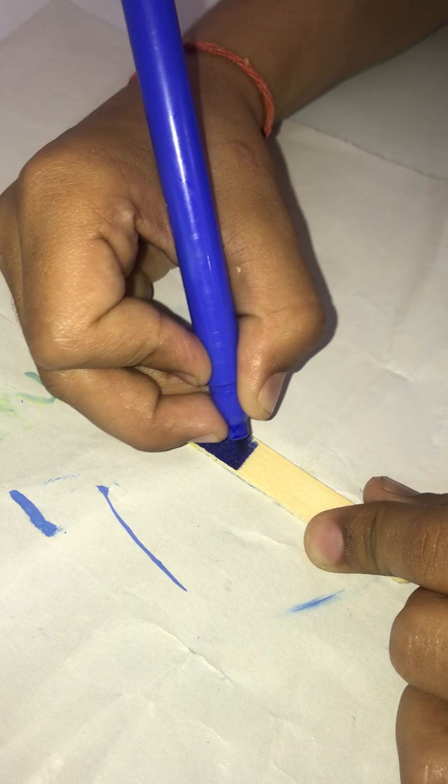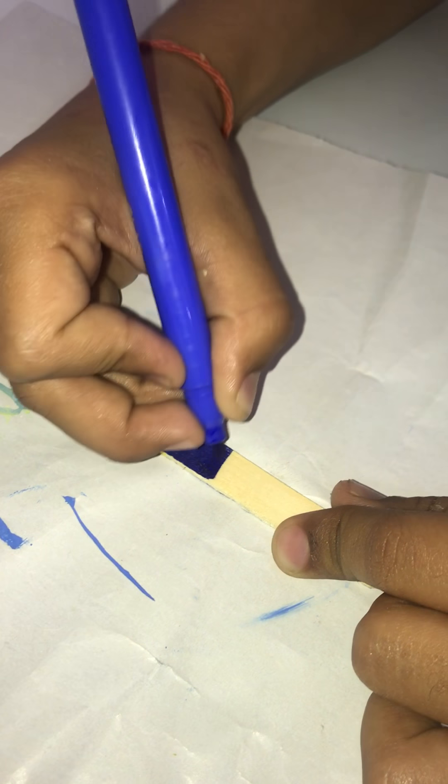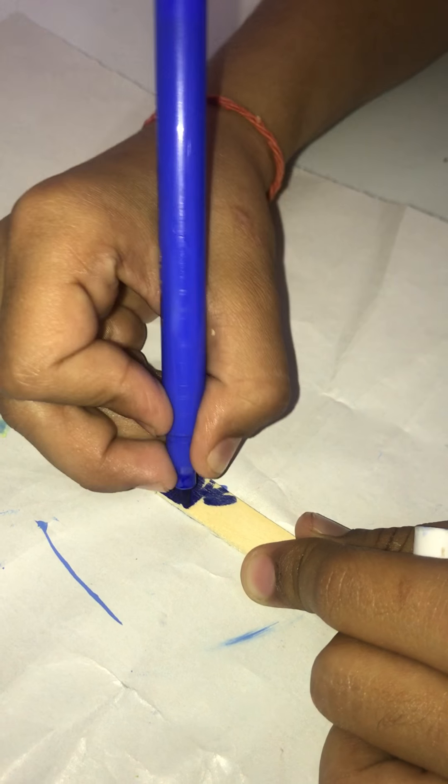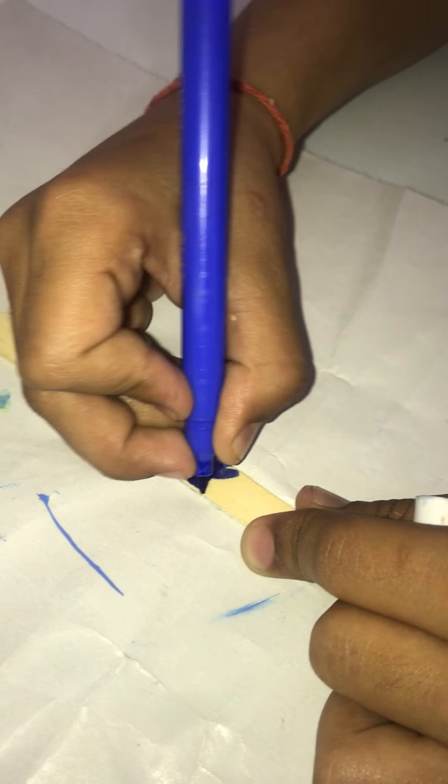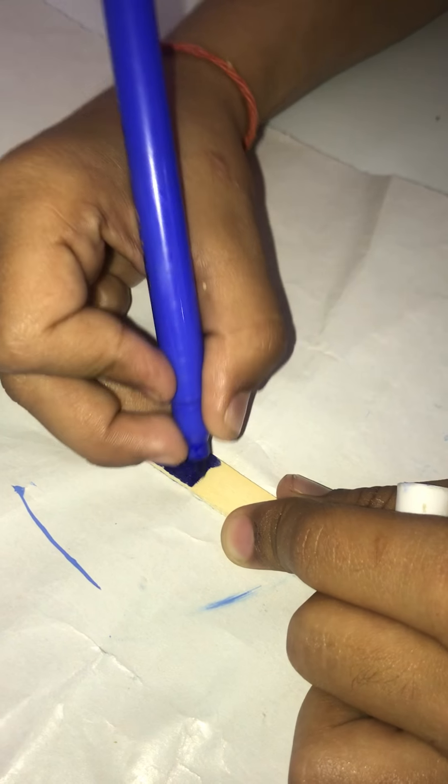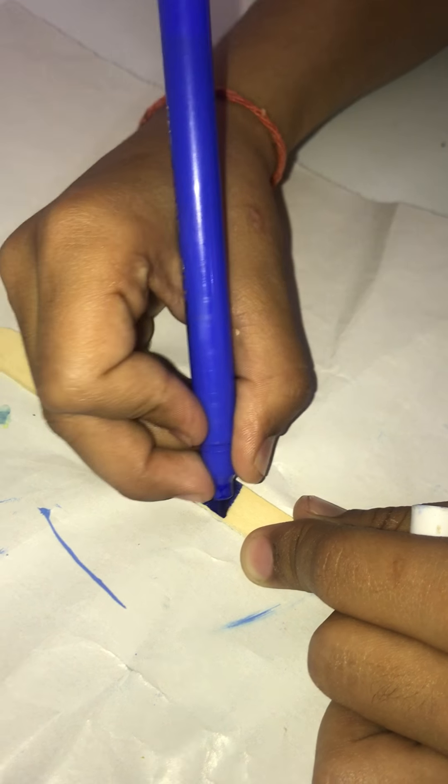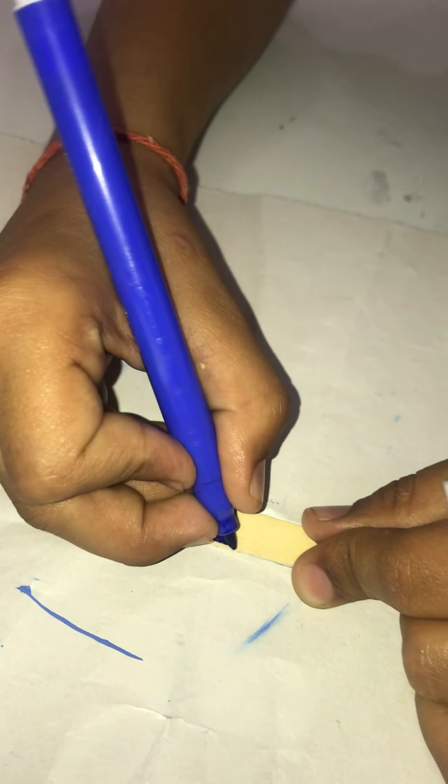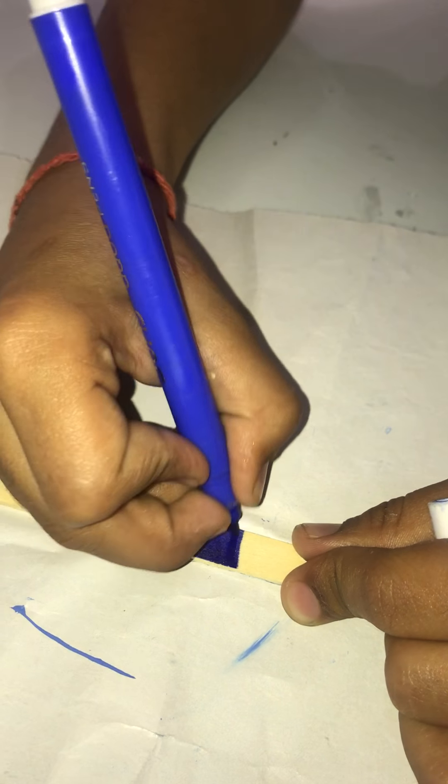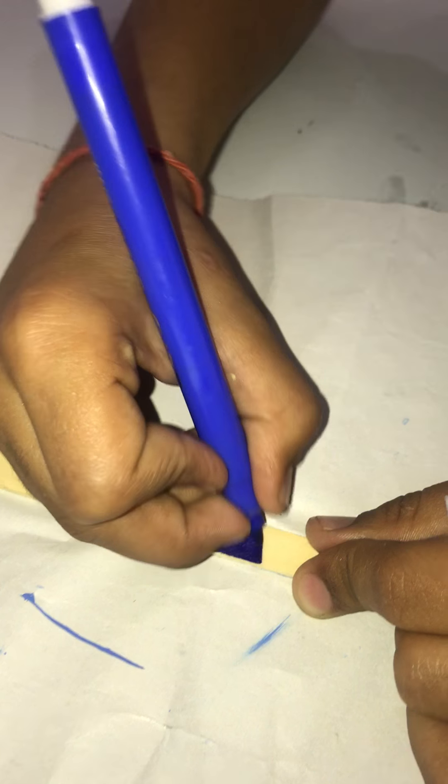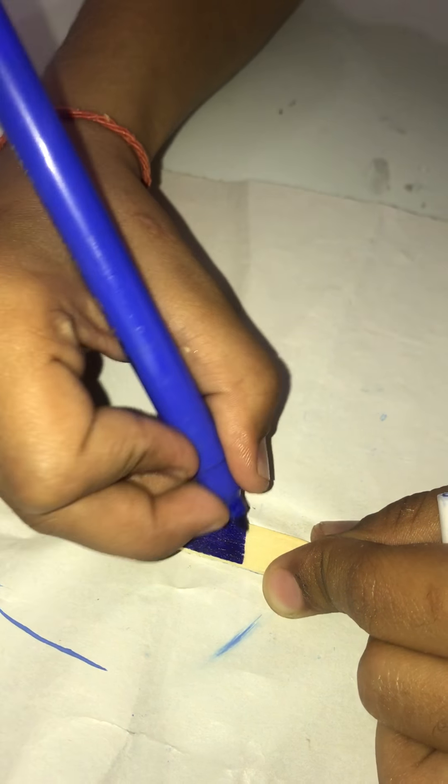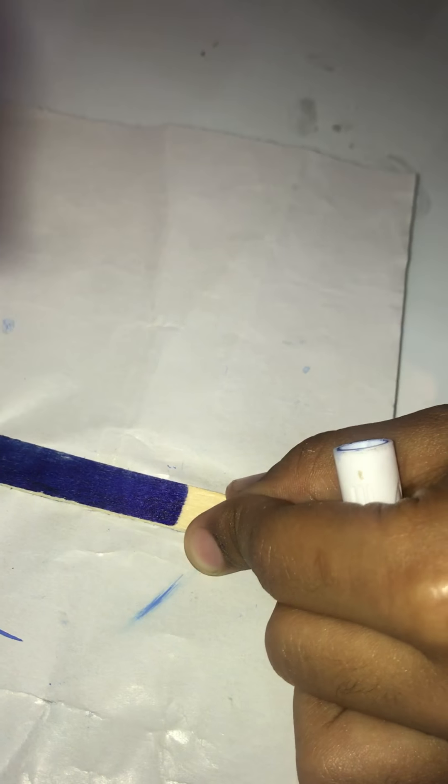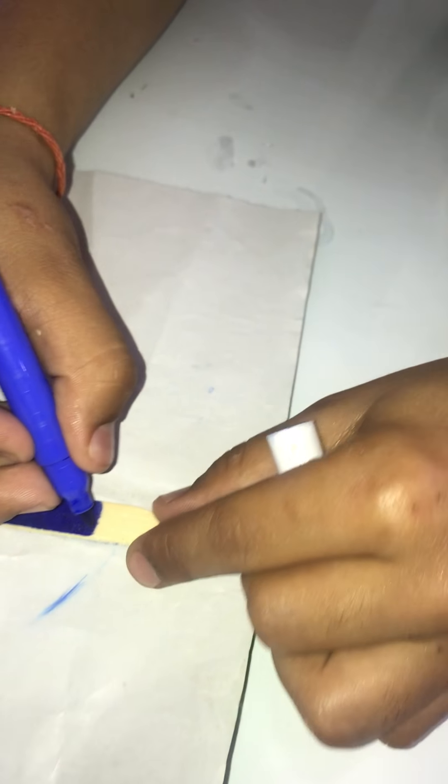We need to put strokes. If we color it like this then the ink will be finished. That's why we have to put some strokes. Look how nice it is looking.